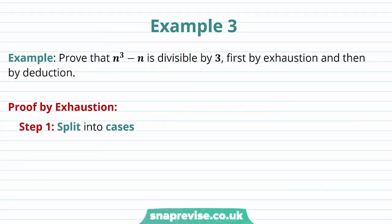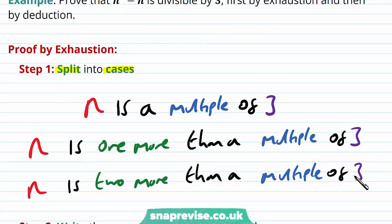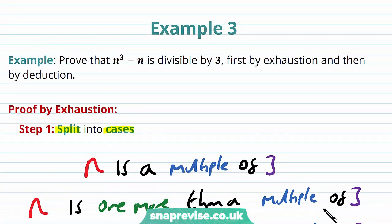Our last example is to prove that n³ − n is divisible by 3, first by exhaustion and then by deduction. We split into three cases: n is a multiple of 3, n is one more than a multiple of 3, and n is two more than a multiple of 3. Splitting into these three cases is useful because the question has divisibility by 3 in it.